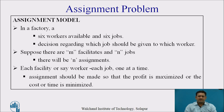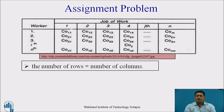Suppose there are M facilities and N jobs. Facilities means you can take the example of labor or workers, and N jobs refers to activities. For each particular job there will be N assignments. Each facility or worker will handle one job at a time. The assignment should be in such a way that profit is maximized or cost and time is minimized. This is a single assignment problem payoff table.